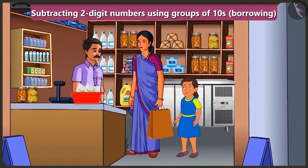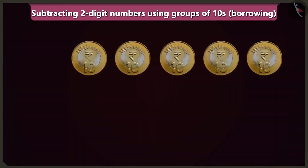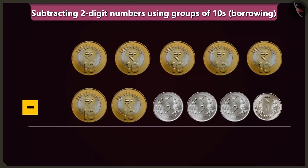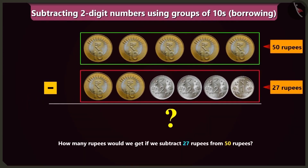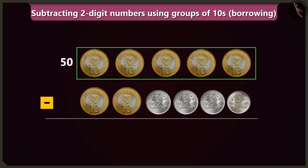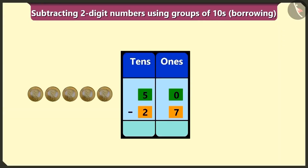What is the price of one packet of milk? One packet is 27 rupees. Take this 50 rupees. Uncle will subtract 27 rupees from 50 rupees and give the rest back. How many rupees would remain if we subtract 27 from 50? 50 means 5 tens and 27 means 2 tens and 7 ones. Let's do subtraction after writing them in the boxes of ones and tens — first subtracting the numbers in the box of ones.